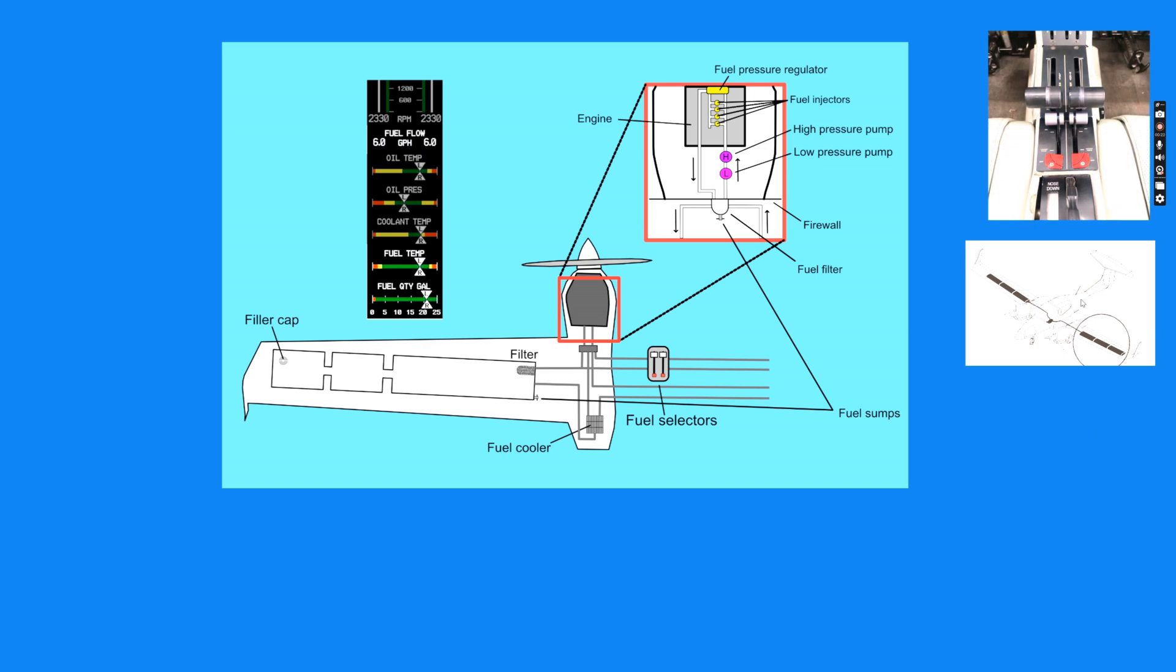The fuel system is operated by means of these two fuel selector levers here just behind the power levers. Each selector has an on position, a cross feed position, and an off position.